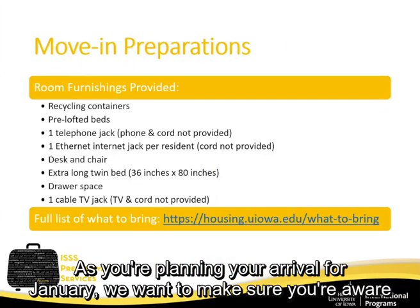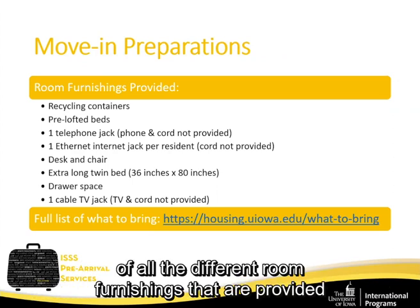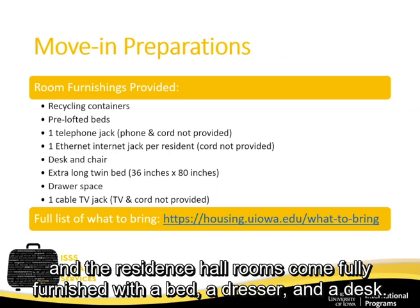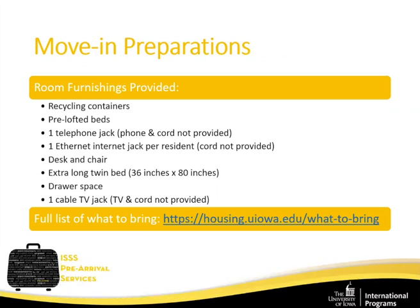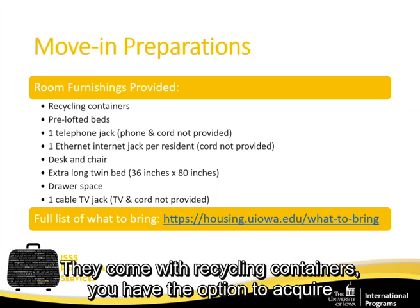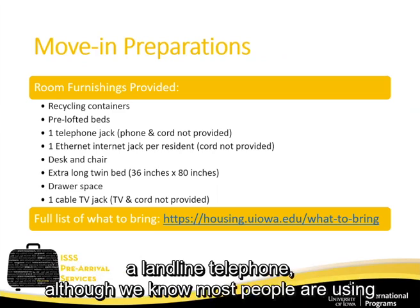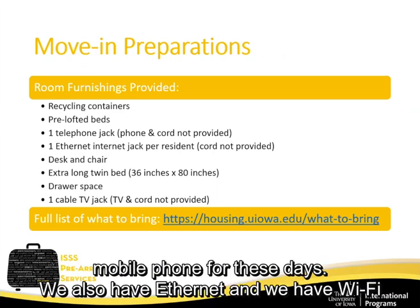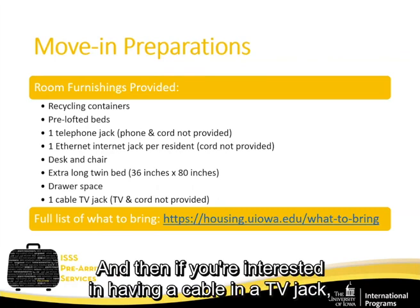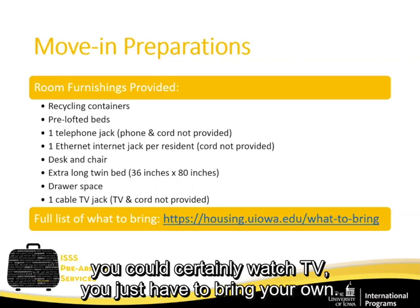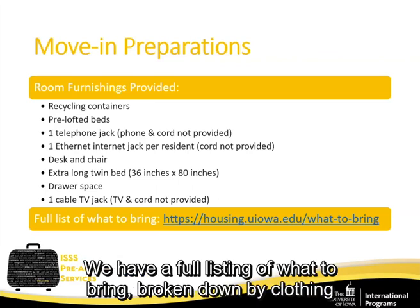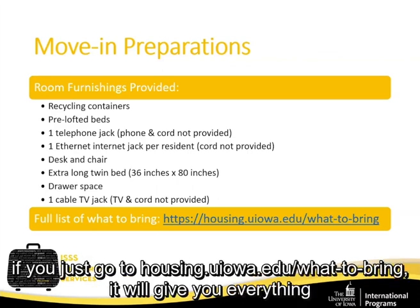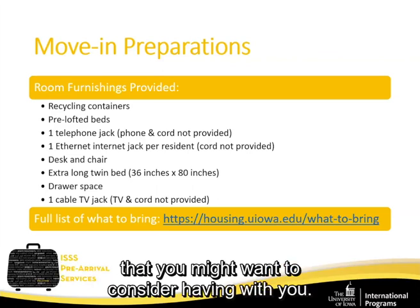As you plan your arrival in January, be aware of what room furnishings are provided. Residence hall rooms come fully furnished with a bed, dresser, and desk. They include recycling containers and the option to acquire a landline telephone, though most people use mobile phones. Ethernet and Wi-Fi are available in all residence halls. If you want cable, you can bring your own TV. A full listing of what to bring, including clothing and personal/toiletry items, is available at housing.uiowa.edu under 'What to Bring.'